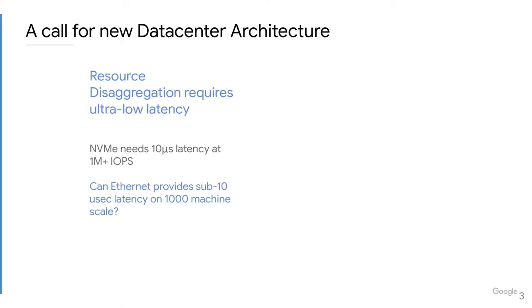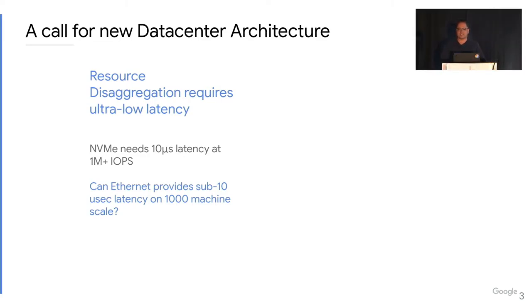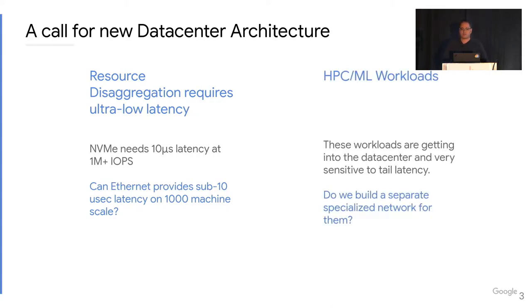First, resource disaggregation requires ultra-low latency to match devices that have latencies of 10 microseconds or less. Can Ethernet support such latency at 1000 machine scale? Moreover, more workloads are getting into the data centers, such as high-performance computing and machine learning. These workloads require tight, predictable latency to keep expensive accelerators running at all times. Currently, we build separate networks specialized for them in order to provide low latency, but that's expensive and adds manageability overhead.